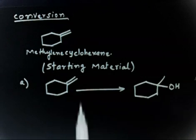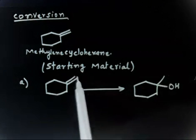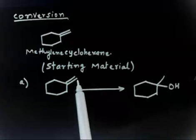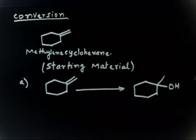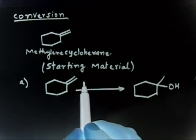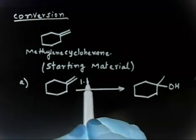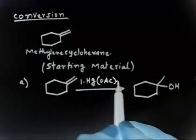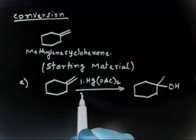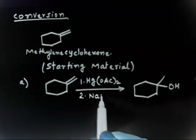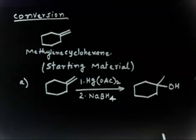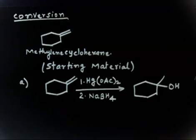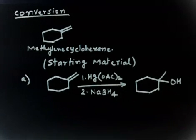This is Markovnikov addition — hydrogen has gone to the position where you already have more hydrogens (three hydrogens vs. two). So this is Markovnikov addition. You can do oxymercuration-demercuration, or simply H⁺/H₂O. The better option is oxymercuration: Hg(OAc)₂ in water as the first step, then demercuration using NaBH₄ as the second step.